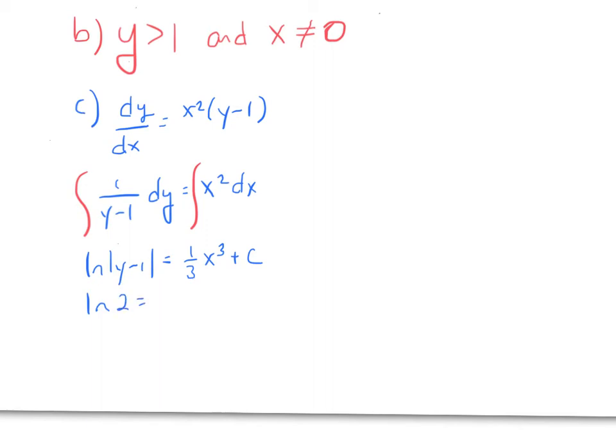And that's when x is 0. So c is equal to 0, so c is equal to ln 2. So we've got (1/3)x³ plus ln 2.